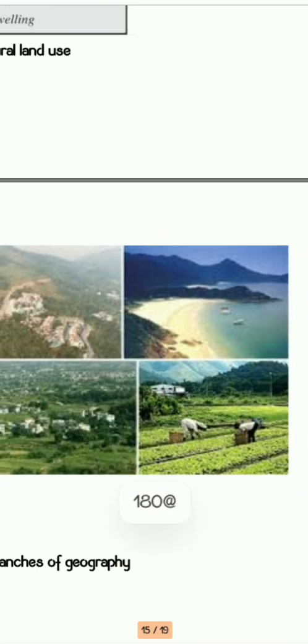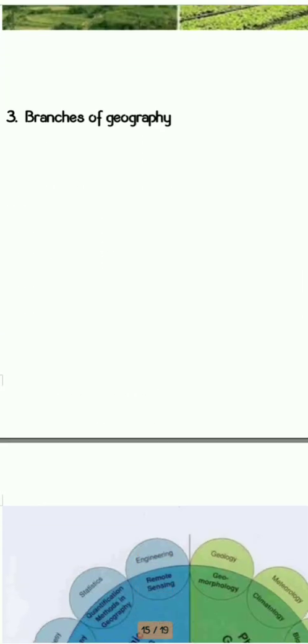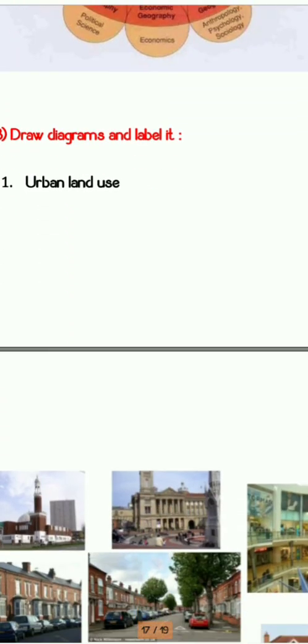Next is rural land use. Rural land use is basically engaged in agriculture, animal husbandry, and fishing — these are primary types of occupations seen in the rural area. After that we have branches of geography, which is a diagram available in your textbook. Be thorough with this diagram because it can be asked in the board examination — it is very important.